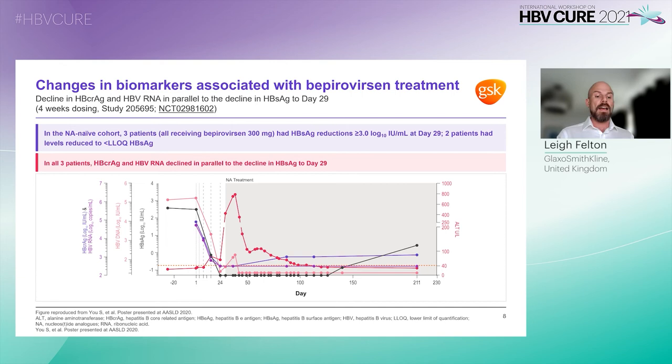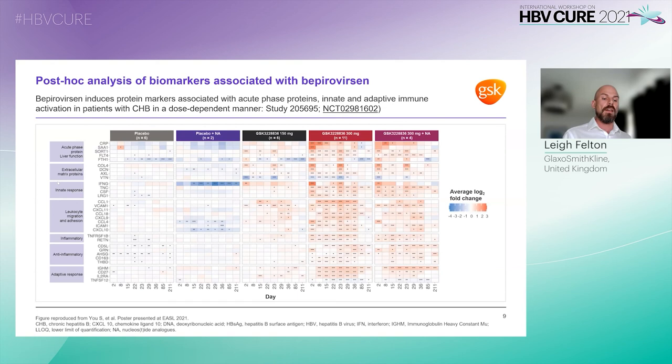Despite the very low levels of cccDNA activity, patients in GSK's bepirovirsen study on stable nucleoside analogue therapy saw significant declines in S antigen of up to 3 logs, indicating activity against integrated DNA. At the International Liver Congress in 2021, GSK also presented new data exploring immunological markers from their phase 2a study.